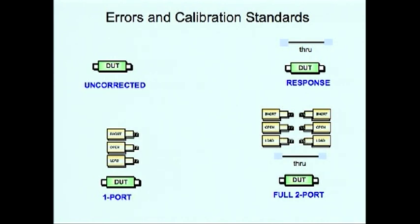The response calibration is easy to perform. It's used when highest accuracy is not required. The calibration removes frequency response errors. The one-port calibration is done for reflection measurements. It requires good termination for high accuracy with two-port devices. The one-port calibration removes errors like directivity, source match and reflection tracking.